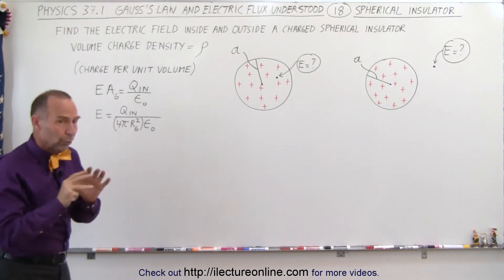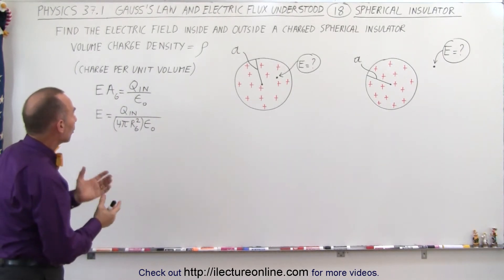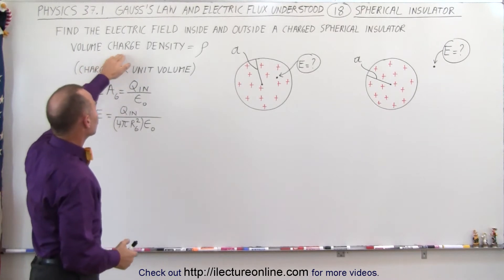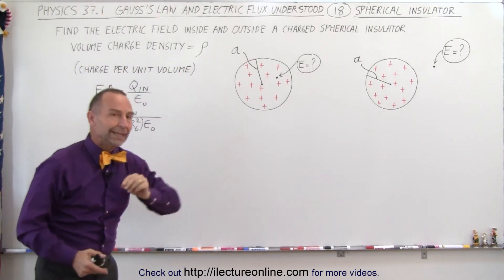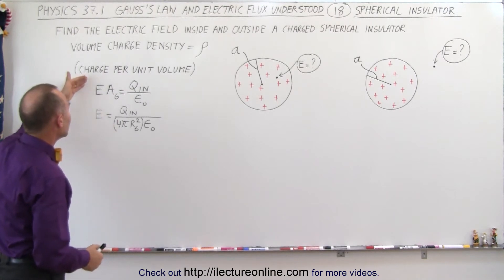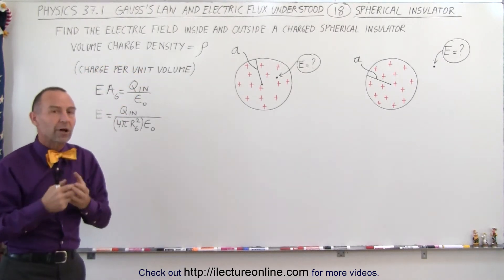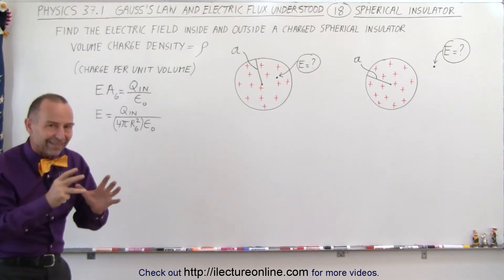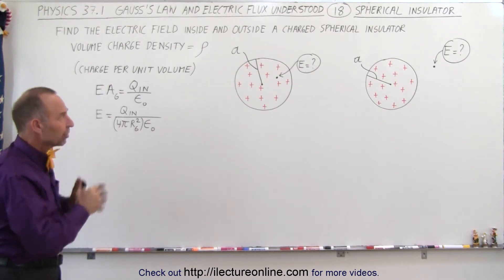The way we're going to look at the way the charge is distributed — we're going to call that the volume charge density, and we use the Greek letter rho to indicate that. What we really mean with the letter rho is that it's the charge per unit volume, so we're told the charge density as a function of volume.